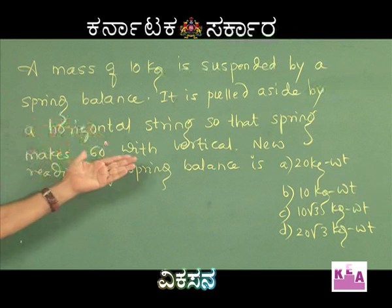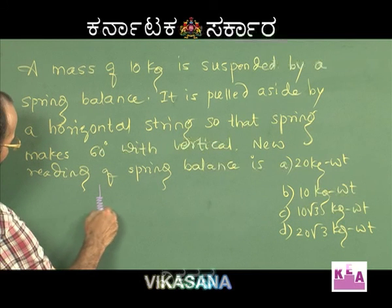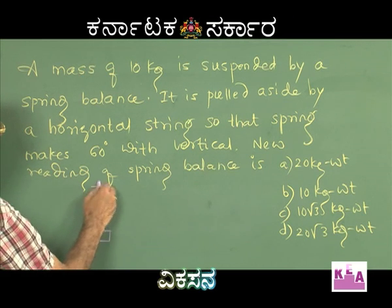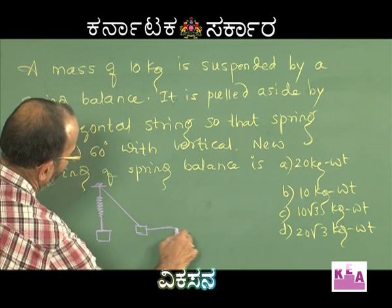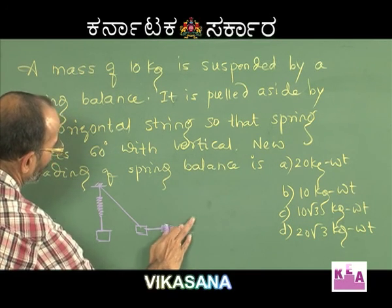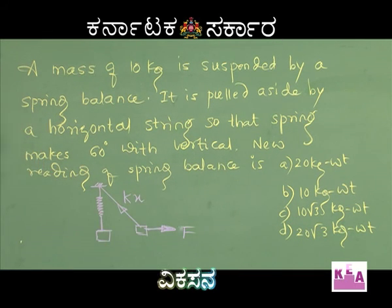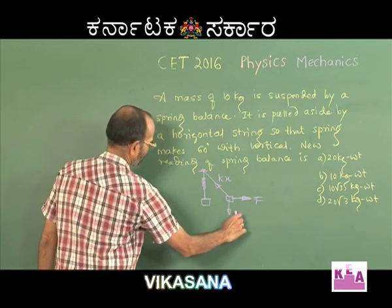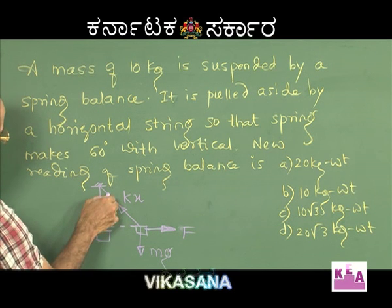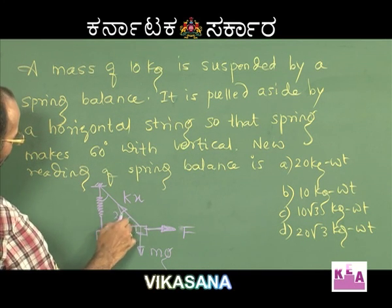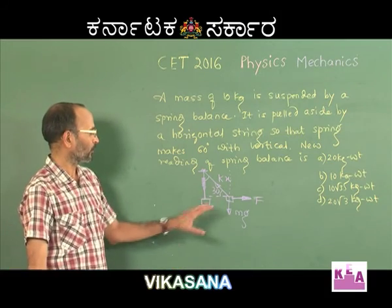Now I will draw a free body diagram of the situation. This was the initial position of the spring when the block was suspended, and now it has been pulled aside horizontally, taking a new position. The horizontal force applied is f. The spring has elongated, so the spring force is kx, and the weight of the body is mg. The angle with the vertical is 60°, so the complementary angle is 30°. We can use Lamy's theorem since there are only 3 forces keeping the body in equilibrium.